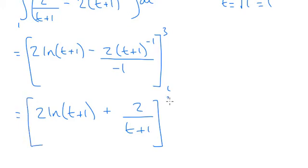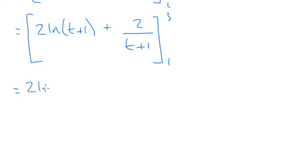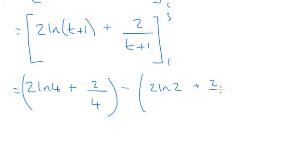Now I'm ready to input my limits. That's 2 ln 4 plus 2 over 4, minus 2 ln 2 plus 2 over 2.